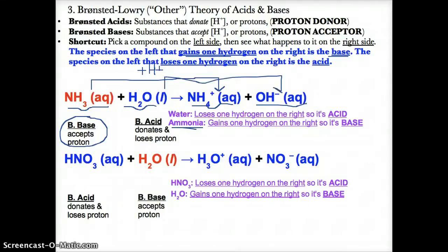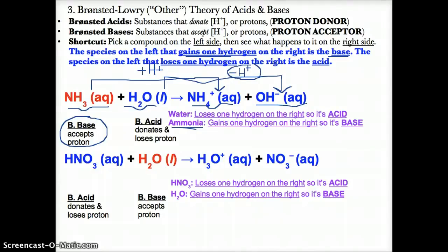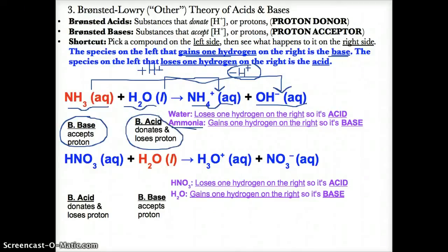On the other hand, H2O on the left has a corresponding species on the right of OH-. H2O becomes OH-, meaning it loses a proton — it goes from H2O to a species with one less hydrogen and a charge of minus one. So H2O is the Bronsted acid because it donates one H+ to go from H2O to OH-.